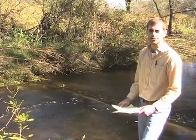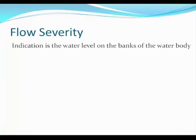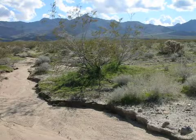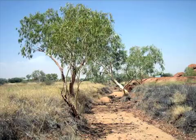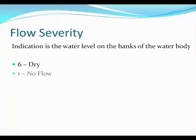Then conduct your field observations. The first field observation is flow severity. When looking at flow severity, the best indication is the water level on the banks of the water body. Record a 6 for dry if there is no water in the stream bed at all. Consider the site dry if there are no visible pools of water. Record a 1 for no flow if the water body does not flow downstream. Record this value if there are disconnected pools of water without even a trickle of flow between them.